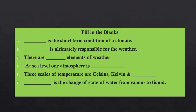Finally, there is a small activity: fill in the blanks. All answers are in the lecture. Number one: dash is the short-term condition of the atmosphere. Dash is ultimately responsible for weather. There are dash elements of weather. The three scales of temperature are Celsius, Kelvin, and Fahrenheit. Dash is the change of state of water from vapor to liquid. This was all for this lecture — I hope things are clear to you and you got sufficient material. If you need sources or have any query regarding vocabulary or terminologies, you are welcome to ask in the comment section.